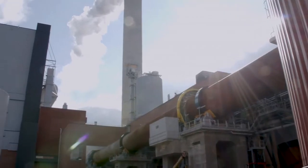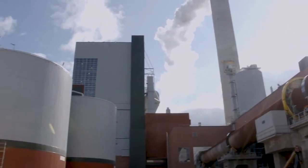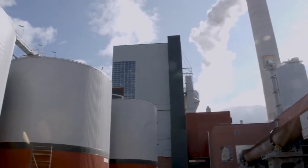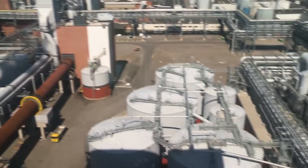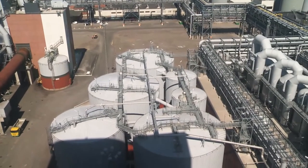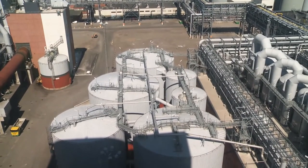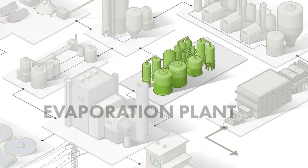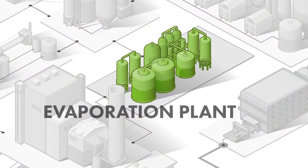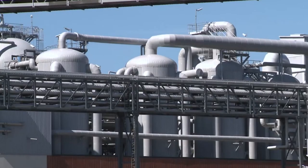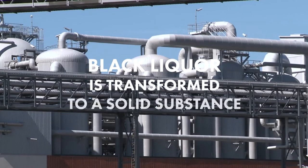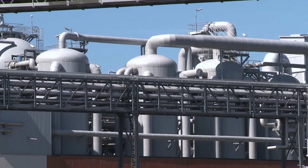Chemical recovery is a crucial component of the chemical pulping process. It recovers processed chemicals from the spent cooking liquor for reuse. Black liquor is evaporated to a high dry solid content in a multi-stage evaporation plant.